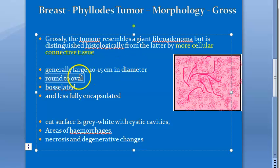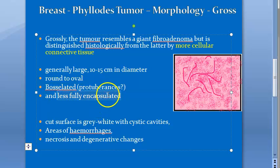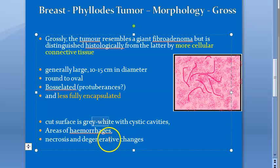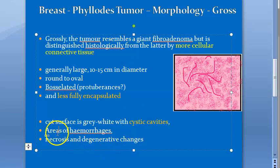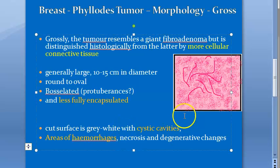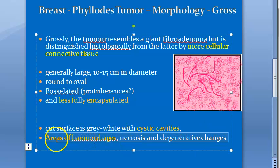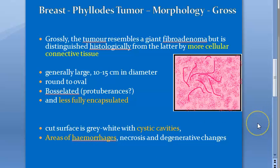Grossly, phylloides tumors are large — 10 to 15 cm in diameter — round to oval, and bosselated, meaning marked or covered with bosses or protuberances. They are less fully encapsulated compared to fibroadenoma, which was well encapsulated. The cut surface is gray-white, similar to fibroadenoma, but also has cystic cavities, areas of hemorrhage, necrosis, and degenerative changes, indicating malignant potential.